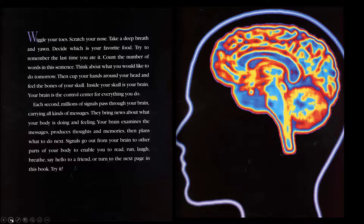Wiggle your toes, scratch your nose, take a deep breath and yawn. Decide which is your favorite food. Try to remember the last time you ate it. Count the number of words in this sentence. Think about what you would like to do tomorrow. Then cup your hands around your head and feel the bones of your skull. Inside your skull is your brain. Your brain is the control center for everything you do. Each second, millions of signals pass through your brain carrying all kinds of messages. They bring news about what your body is doing and feeling. Your brain examines the messages, produces thoughts and memories, then plans what to do next. Signals go out from your brain to other parts of your body to enable you to read, run, laugh, breathe, say hello to a friend, or turn to the next page in this book. Try it.